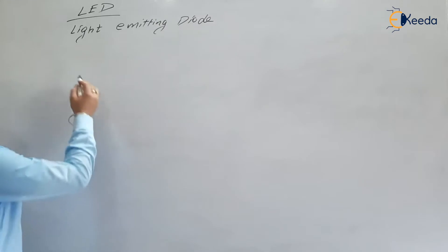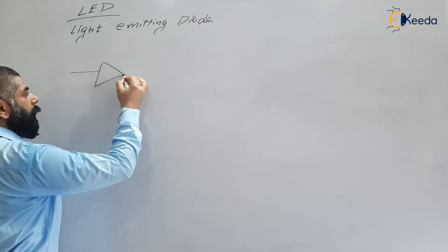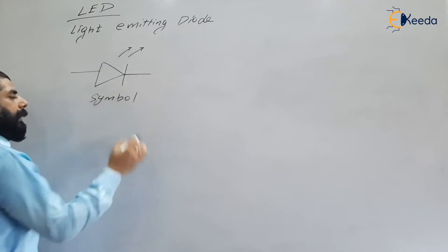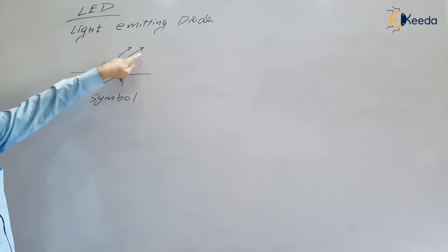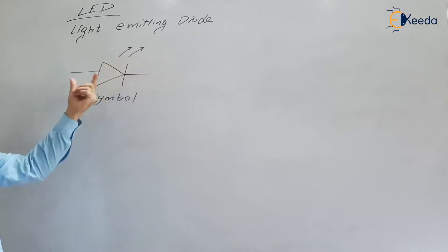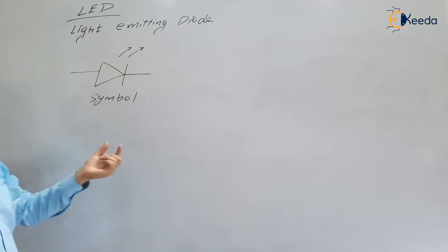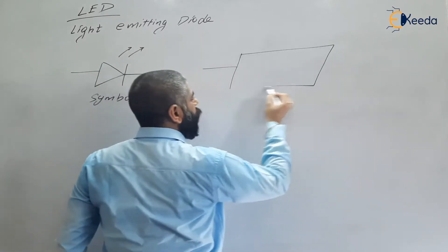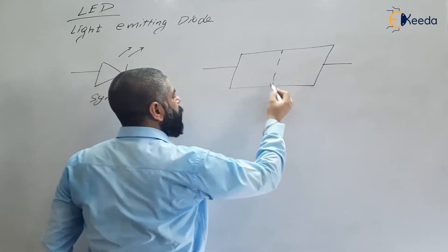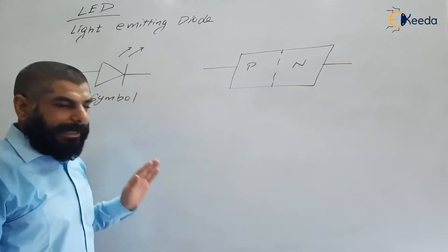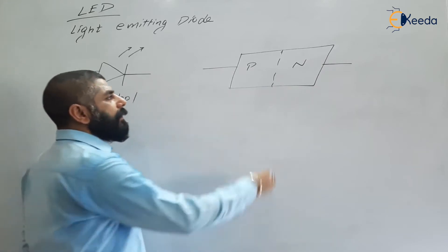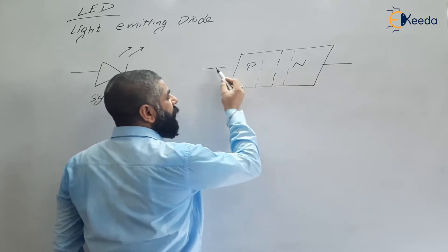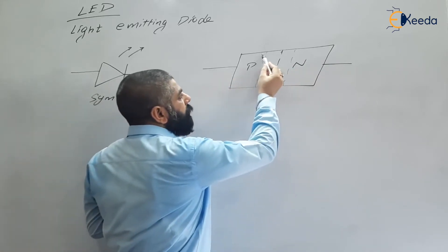LED stands for light emitting diode. It emits light when it is forward biased — this is the symbol of LED with arrow output indicating that light is emitted. LED is always operated in forward bias region. To understand why, consider a PN diode; there is a difference between a normal PN diode and an LED.